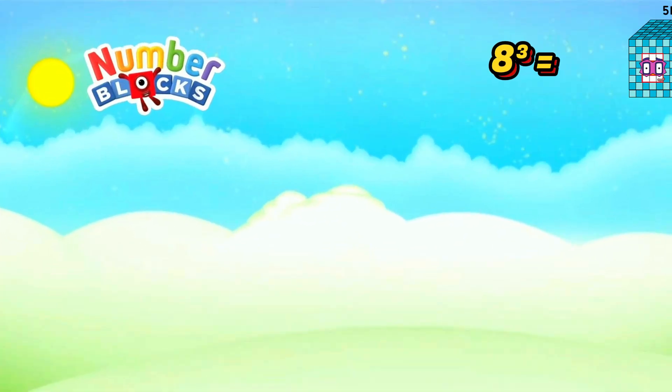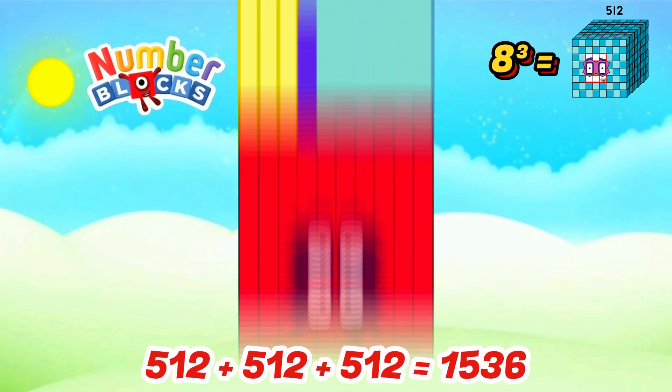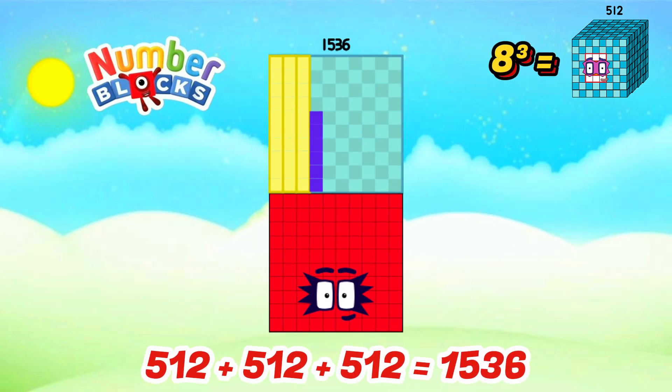Cube of 8 is 512. When we add 512 three times, the answer is 1536. Amazing!